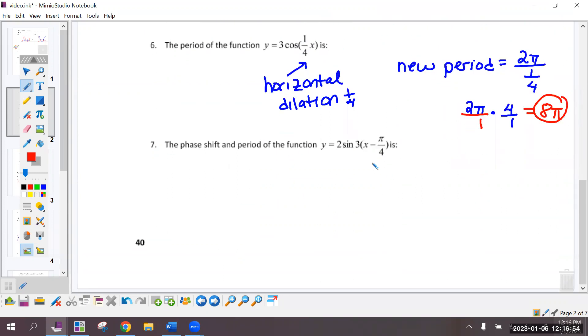The phase shift. The phase shift, that's here, that's to the right, pi over 4. And the period is 2 pi over this B value because there's a horizontal dilation of 3.